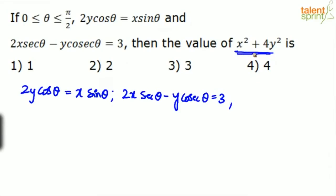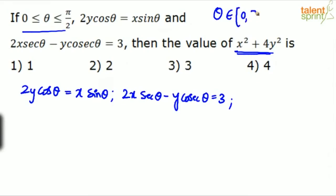We are supposed to find the value of x² + 4y². I would suggest substituting some value of θ. The only condition is that θ should fall between 0 and 90, both included. So θ belongs to the range 0 to π/2.